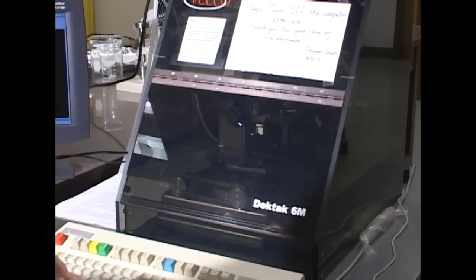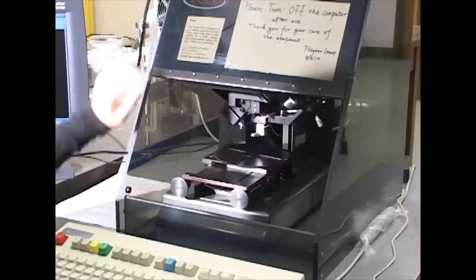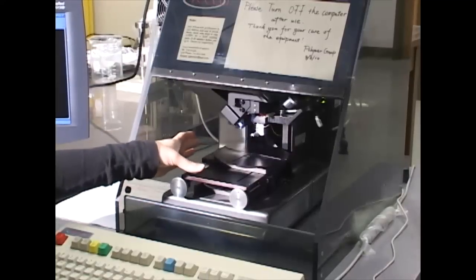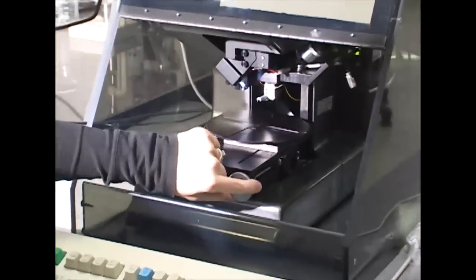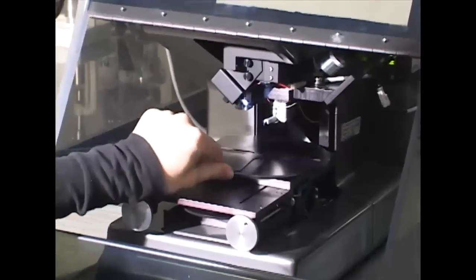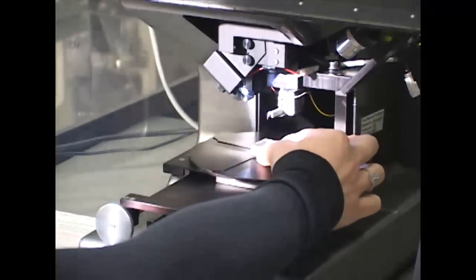So the next step is to load our sample. We'll open the chamber. Inside we have the rotating sample stage. It's adjustable with a few of these knobs here, and then also it turns. So we'll place our sample.